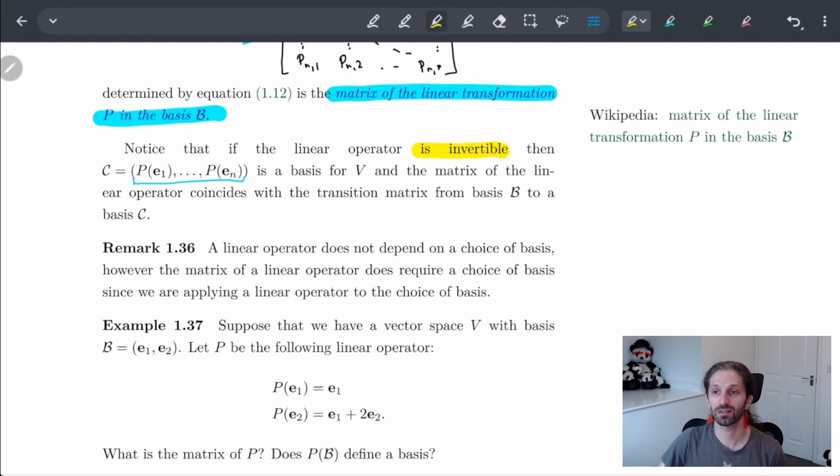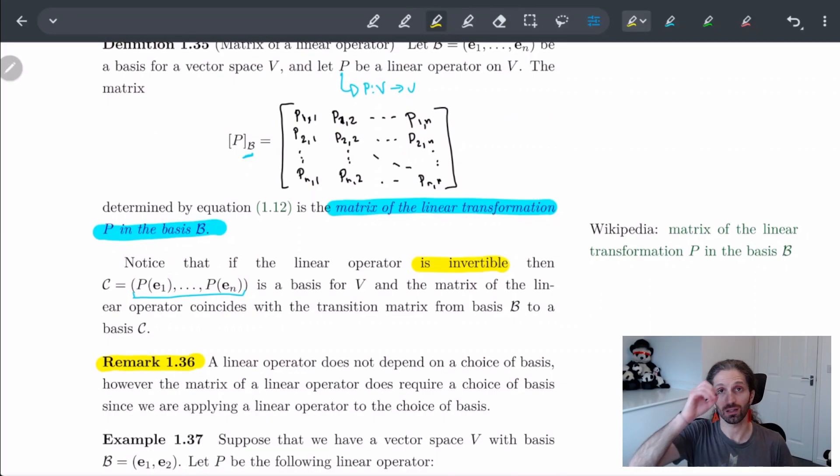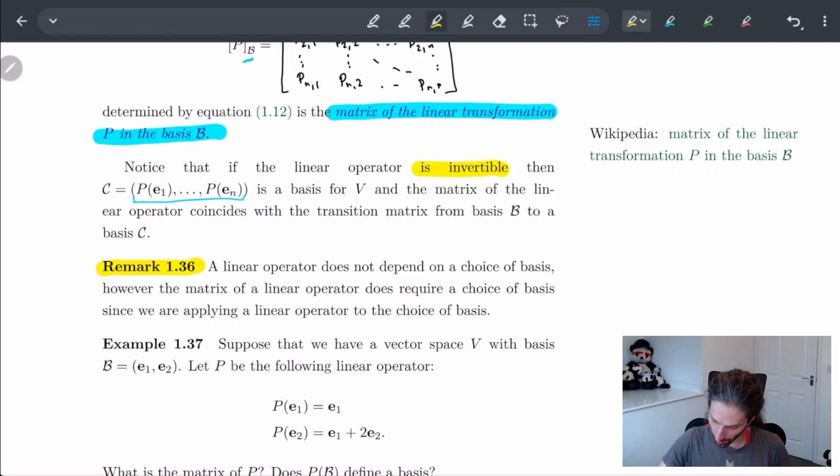But the extra nice thing is the following remark: the linear operator actually does not depend on the choice of a basis, but the matrix of a linear operator does require a choice of basis. The linear operator is acting on the vectors themselves, and the vectors don't really care what the basis is—it's just taking one vector to another vector. But when we look at the matrix itself, this is dependent on the choice of basis. This is why we have this little B notation next to the brackets of P.